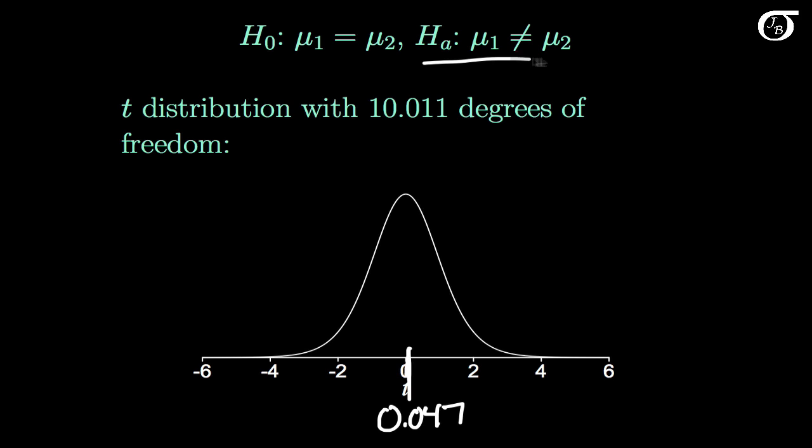For this alternative hypothesis, values far out in the right tail, or far out in the left tail, give evidence against the null in favor of this alternative. But our value of 0.047 is very near 0, very near the middle of the distribution, giving no evidence against the null hypothesis.